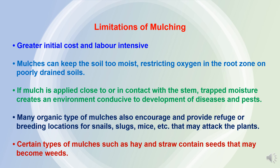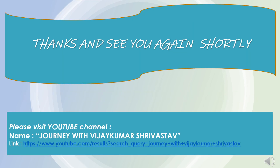Certain types of mulches like hedge and extract contain seeds that may become weeds for the next crop. So these are some limitations of using mulching. This presentation was all about mulching. Hope this will be useful to all of you. Thank you very much. I have given here my YouTube channel details — Journey with Vijay Kumar Srivastava. Please visit the channel, subscribe it, and provide your kind and valuable feedback. Thank you.